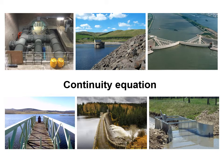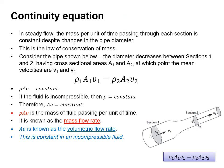Now let's look at continuity. In steady flow, the mass per unit time passing through each section is constant despite changes in pipe diameter — this is the law of conservation of mass. If the diameter decreases between sections one and two, with cross-sectional areas A1 and A2 and mean velocities V1 and V2, then ρAV is constant. If the fluid is incompressible, density is constant, so the area times velocity is also constant. ρAV is the mass flow rate, and AV is the volumetric flow rate, which is constant in an incompressible fluid.